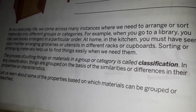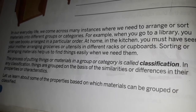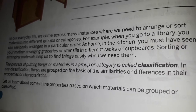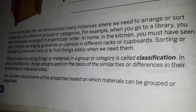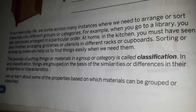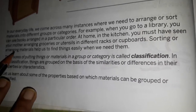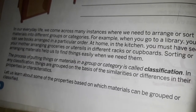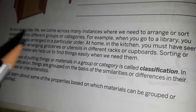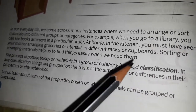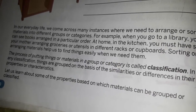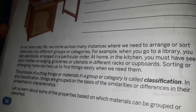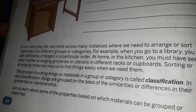Sorting is one advantage. If you classify things properly and store them in a group — like keeping plates in the kitchen — your mother will easily find them. But if a kitchen item is kept in a bedroom, we can't find it at all. So arranging things in our life, as well as in the subject of science, is very important. The process of putting things and materials into a group or category is called classification.